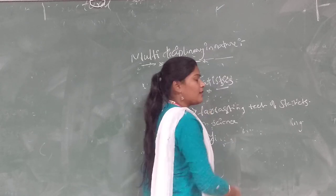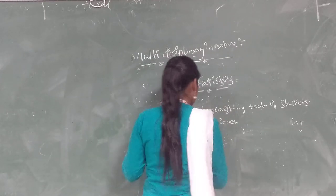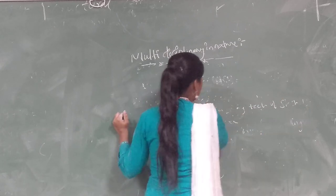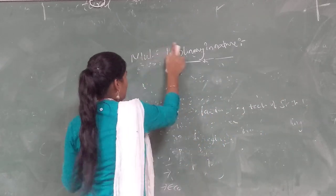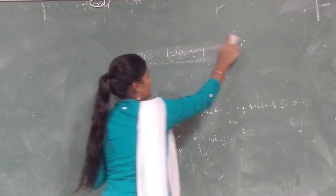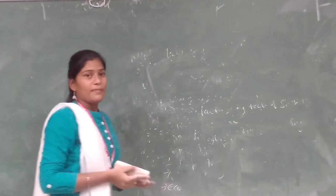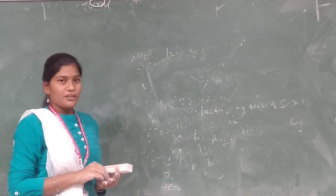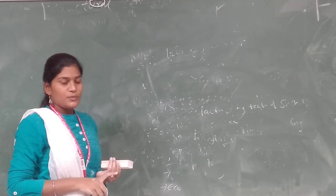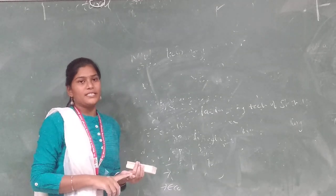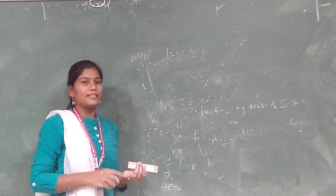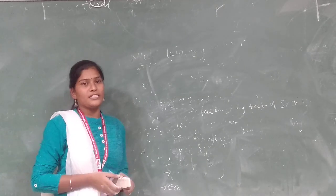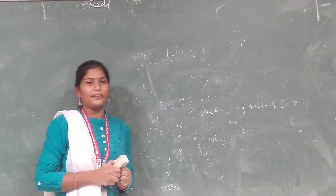To summarize what we have discussed today: we covered what is economics, the parts of economics — micro and macro — then what is business economics, the objectives of business economics, the characteristics of business economics, and the multidisciplinary nature of business economics. Thank you.